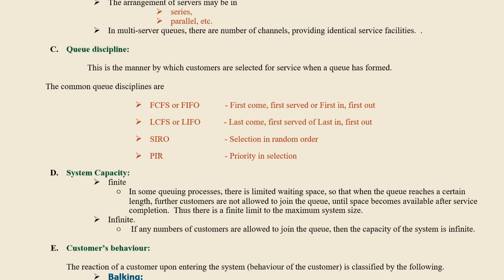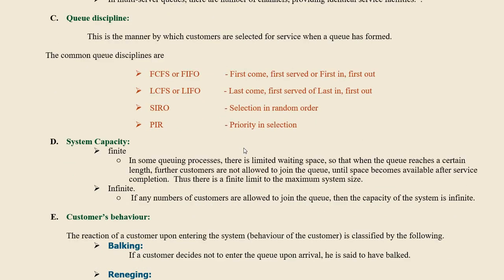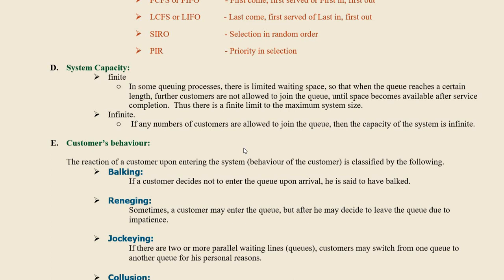The next characteristic is queue discipline, which has four types: first, first-come first-served (FIFO); second, last-come first-served (LIFO); third, selection in random order; and fourth, priority in selection. Queue discipline is the manner in which customers are selected for service when a queue is formed. First-come first-served means those who arrive first get served first; last-come first-served means those who arrive last get served first.